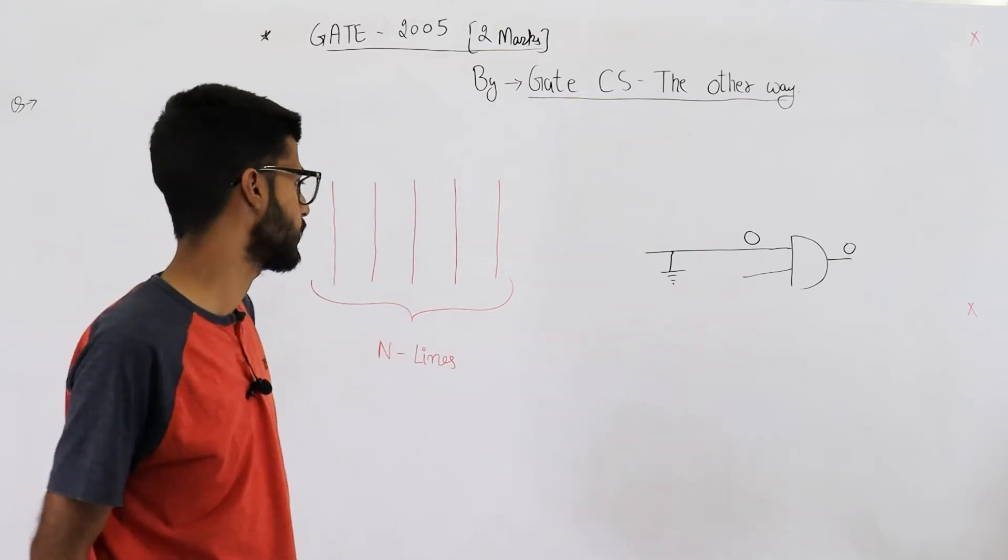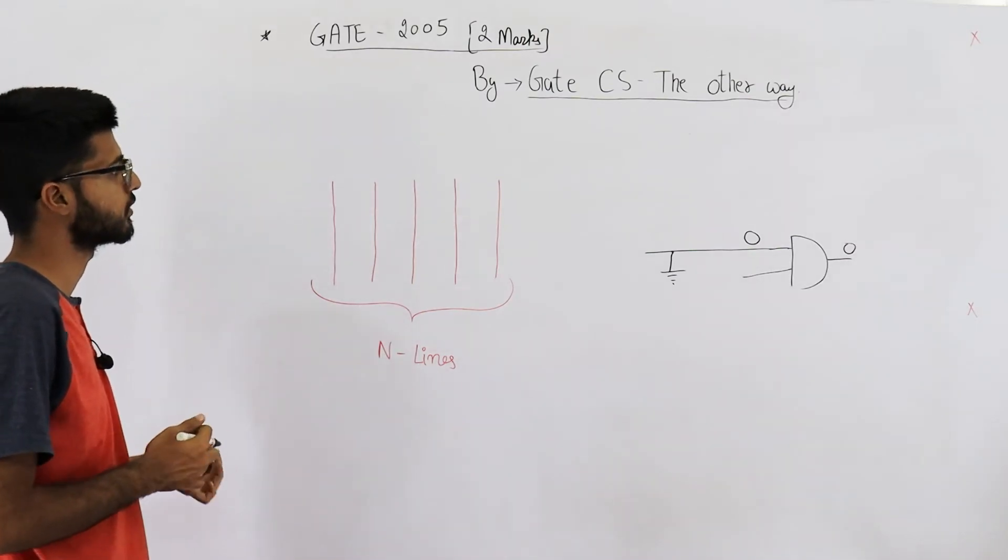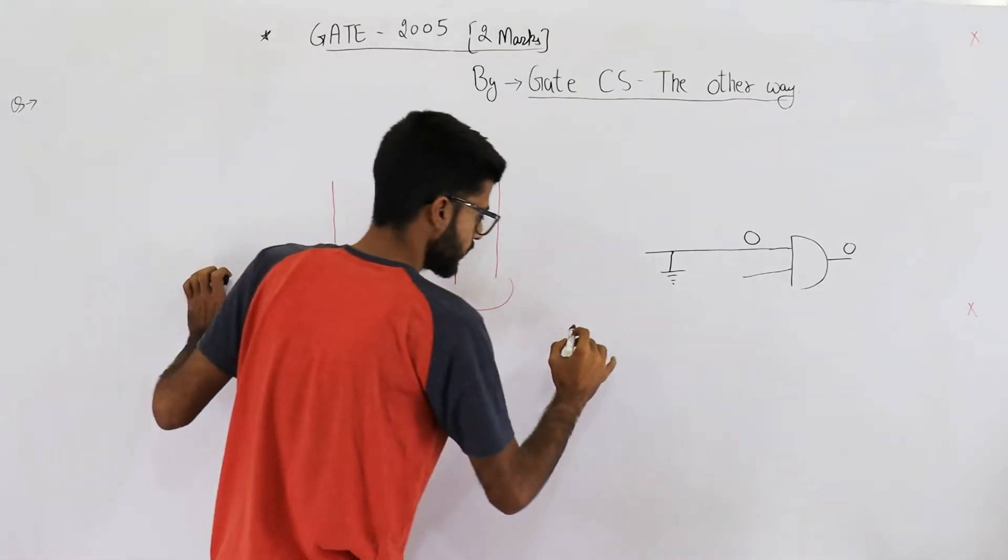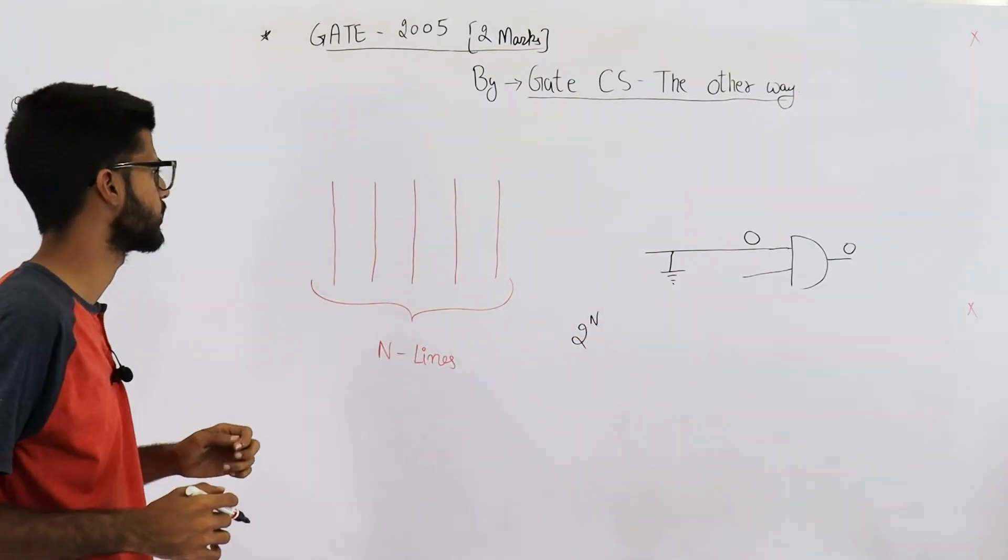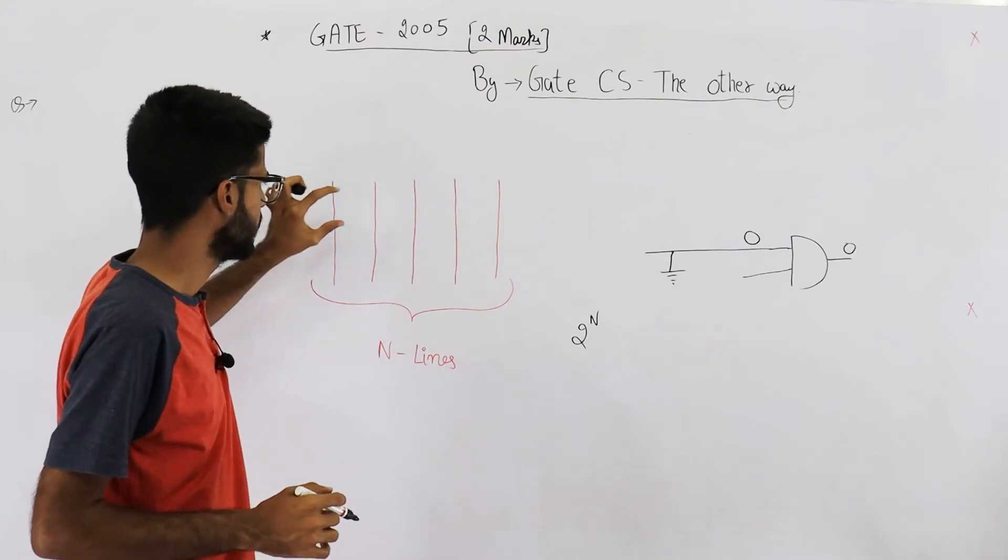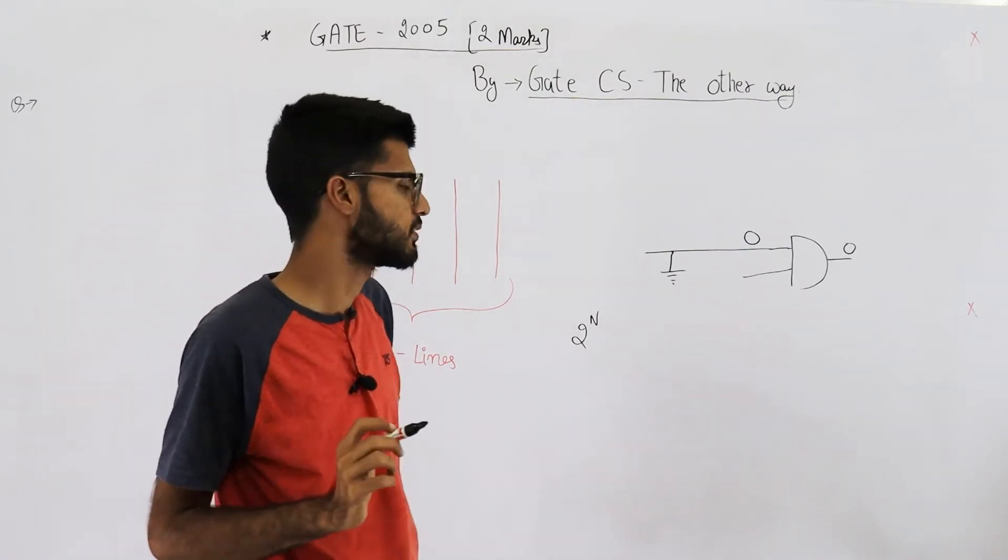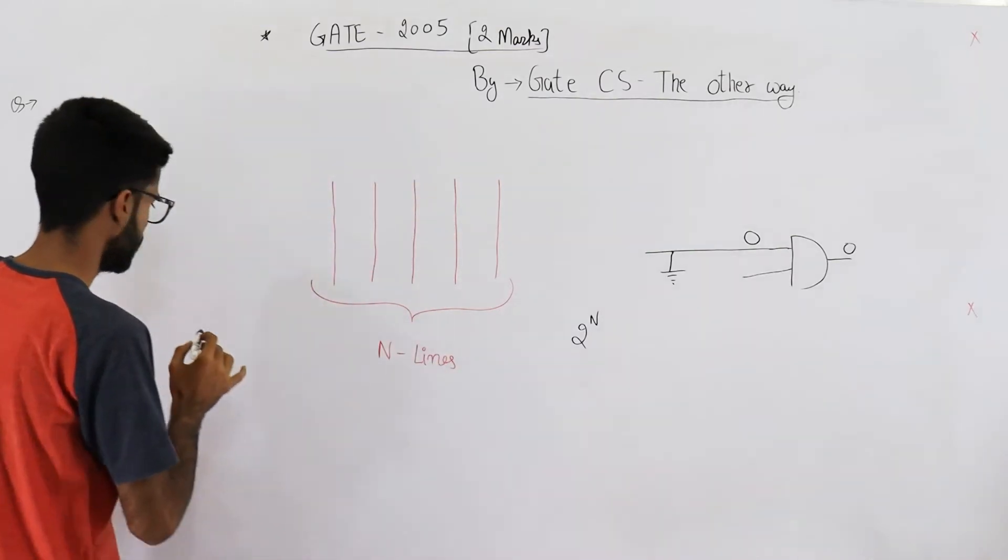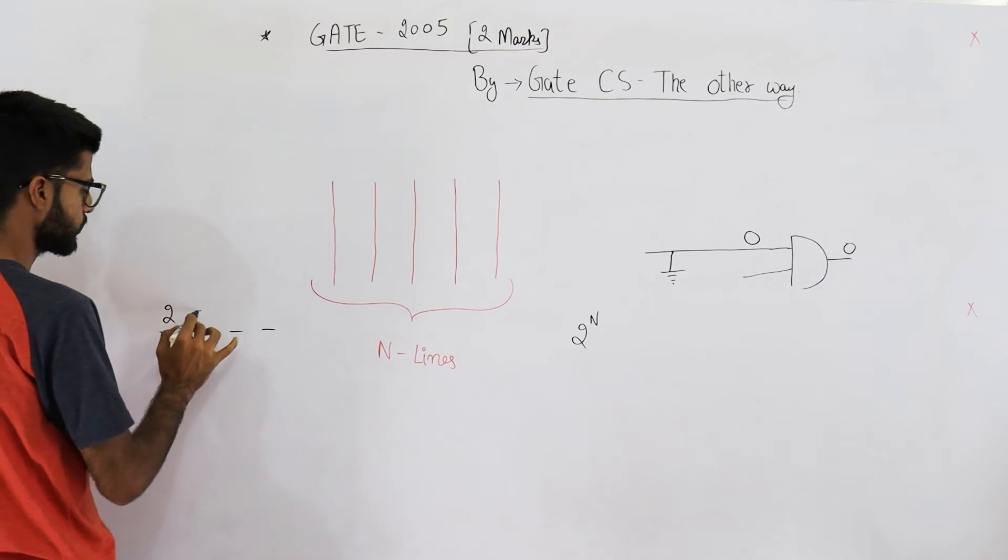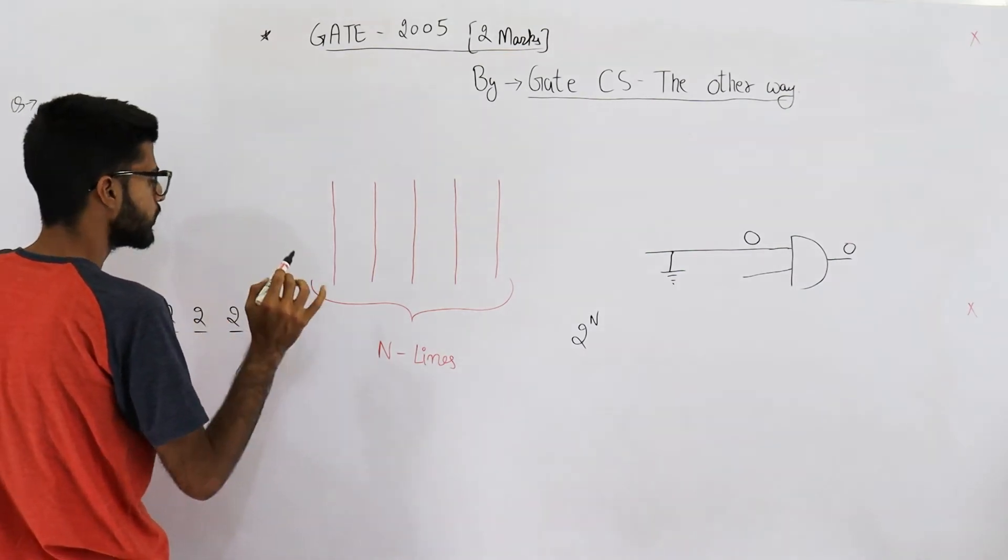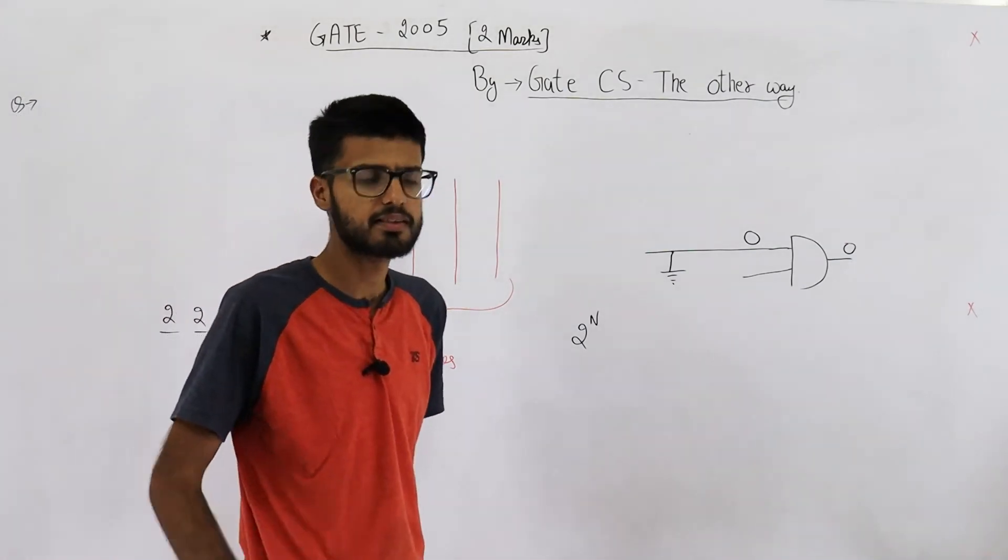you need to count each and every possibility. First mistake that you might make is you might get 2 raised to the power N as your answer. You'll also find it in options because you'll say each of these N lines could either be stuck-at-zero or stuck-at-one, so N places and each place has two possibilities. And the total becomes 2^N. But this is wrong